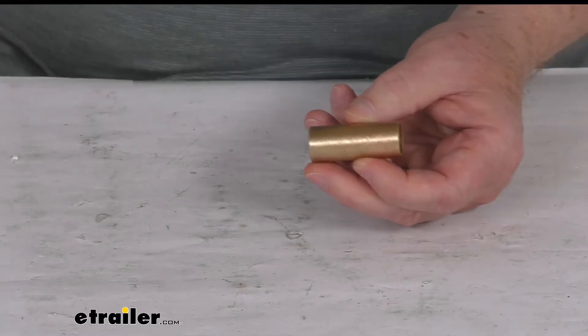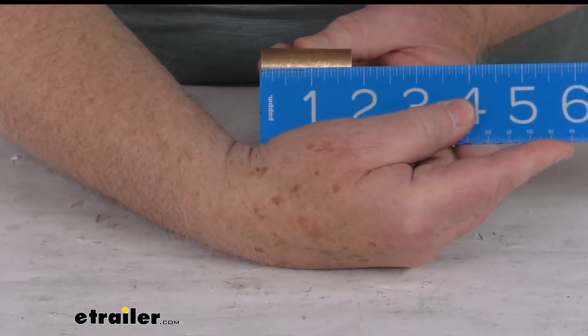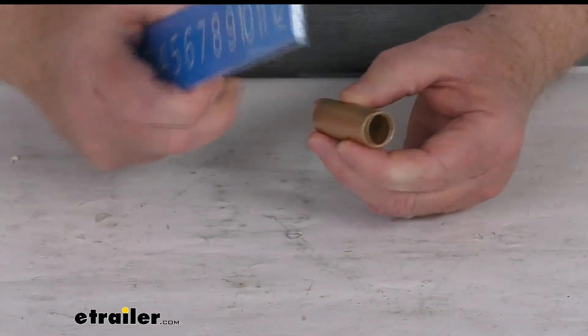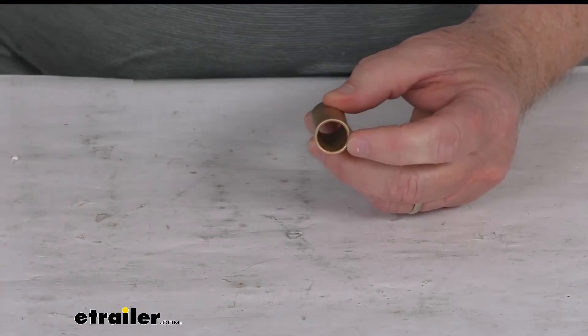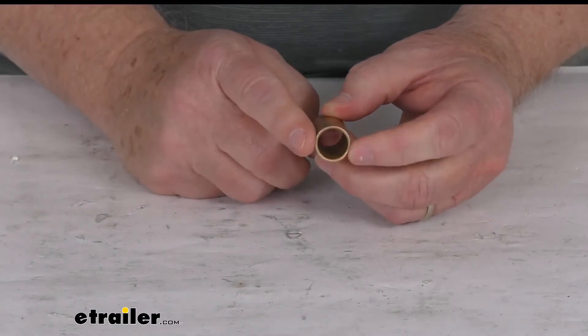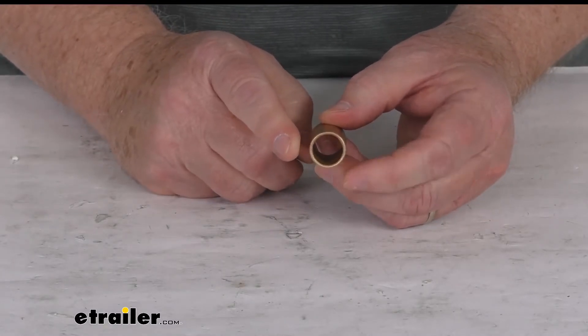A few specs on this. The length will be right at one and three-quarter inches. Inner diameter is five-eighths of an inch and the outer diameter is 0.70 of an inch.